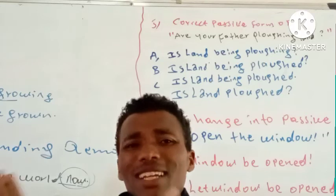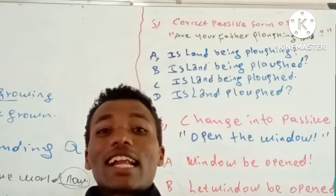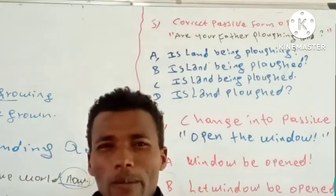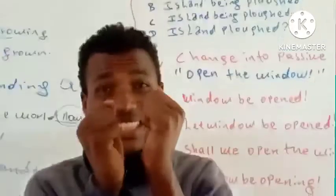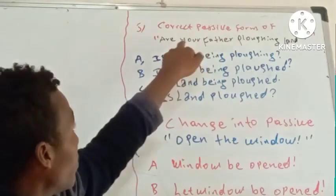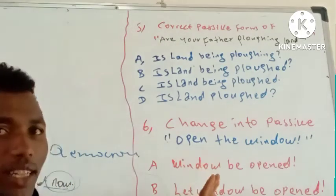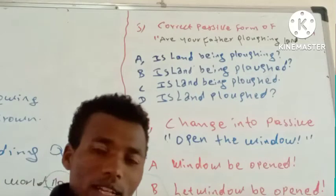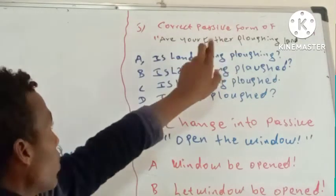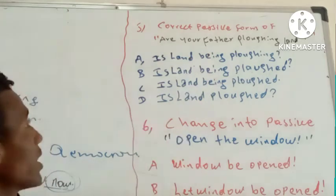I have prepared the first question in the form of a question path, and the second in the form of a command path. Fifth question — the correct passive form of: 'Are your father ploughing the land?'